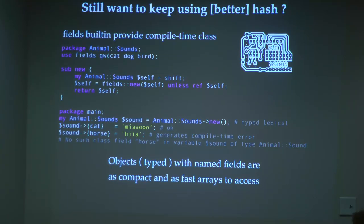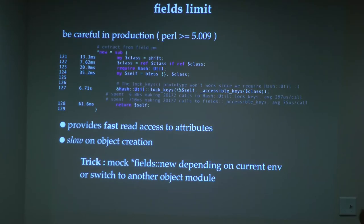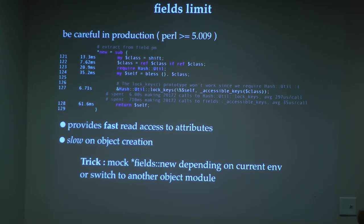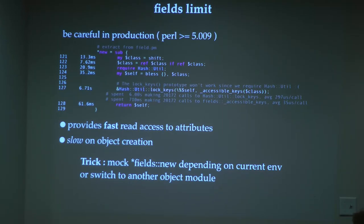Fields has a drawback: the lock_keys call. If you look under the hood of Fields, there's a sub where lock_keys is what slows down your application if you create many objects. If you create one object and do many read-writes, that's fine. But if you need to create millions of objects, you'll have slowness there. One solution: use Fields in development and when switching to production, mock and disable lock_keys.